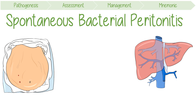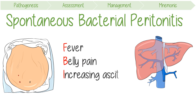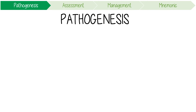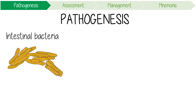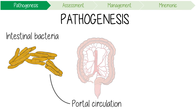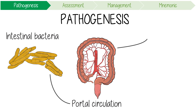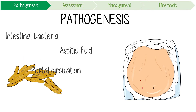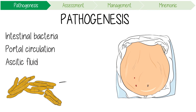Classically, patients present with a classic triad of FBI: fever, belly pain, and increasing ascites. The actual pathogenesis of SBP is thought to be through the intestinal spread of bacteria into the portal circulation and then the ascitic fluid. The most common pathogen is E. coli, accounting for 50% of cases.